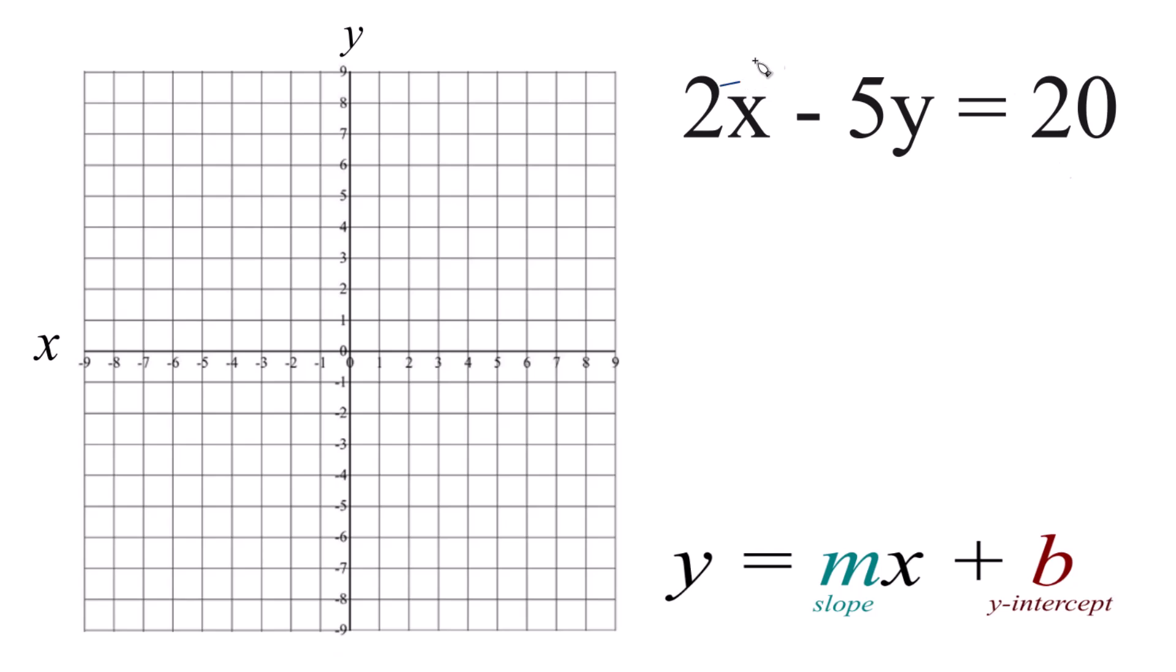I'm going to subtract 2x from both sides. That'll give us the negative 5y by itself. Then I'm going to divide both sides by negative 5, so we have y by itself.